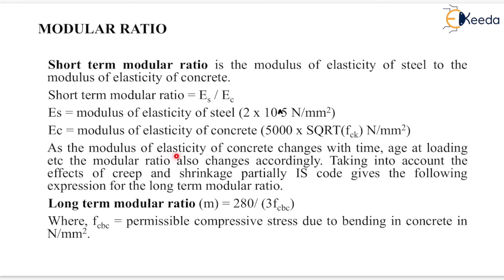As the modulus of elasticity of concrete changes with time, age at loading, etc., the modular ratio also changes accordingly. Taking into account the effects of creep and shrinkage partially, the Indian standard code gives the following expression for the long-term modular ratio: m = 280 / (3 × σcbc), where σcbc equals the permissible compressive stress due to bending in concrete in Newton per mm square.